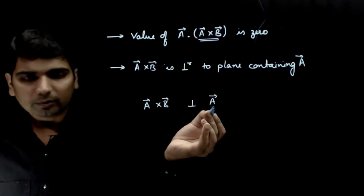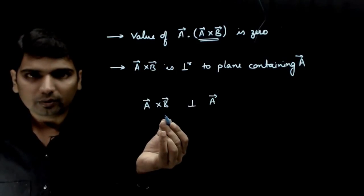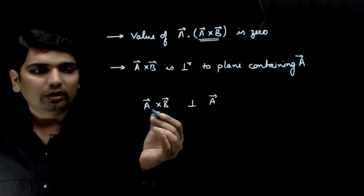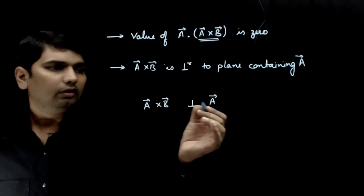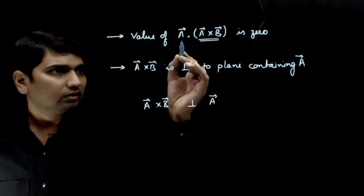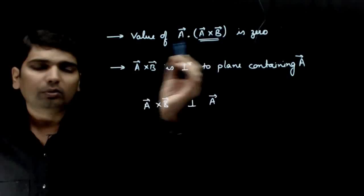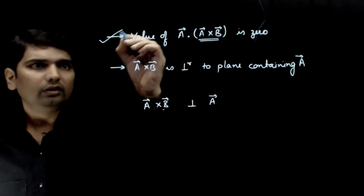In fact, it is perpendicular to A vector, perpendicular to B vector, and perpendicular to the plane containing A and B. So this statement is correct because these two vectors are perpendicular, their dot product will be zero. This statement is correct.